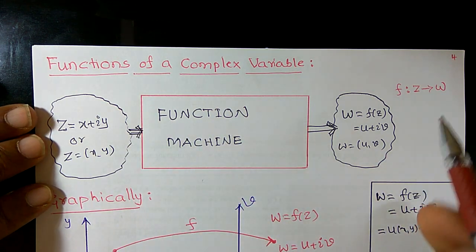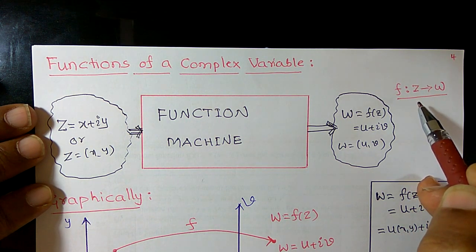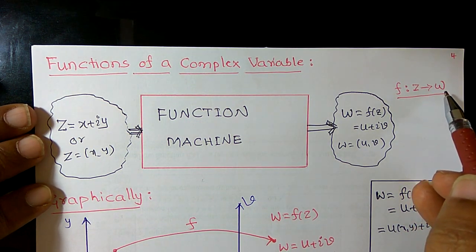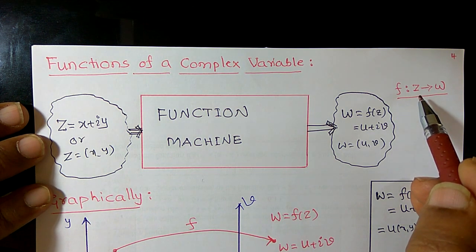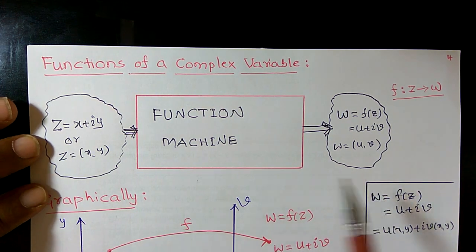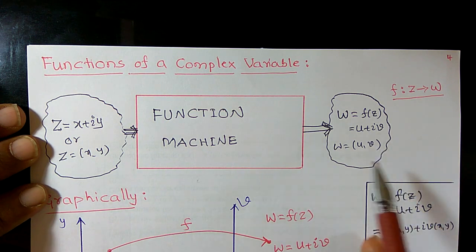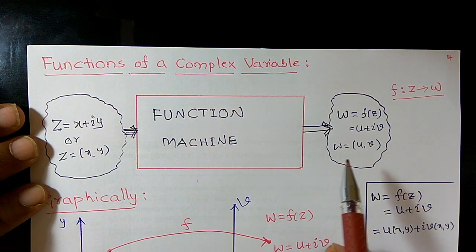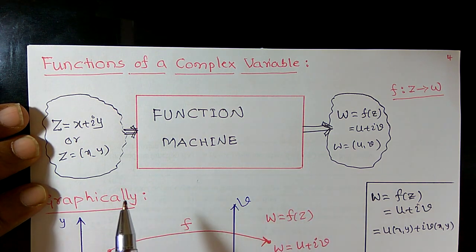Or a complex valued function can also be represented by using this symbol f from z to w. So z is a complex variable, w is also a complex variable. It means input is a complex number, output is also a complex number. Any correspondence like this, we may call it as complex valued functions.